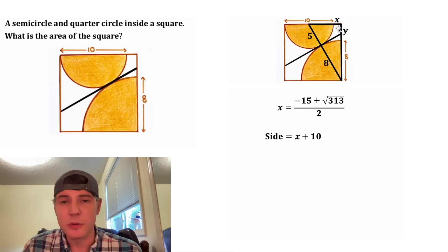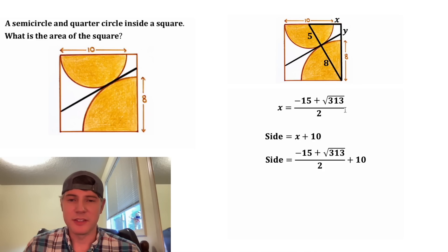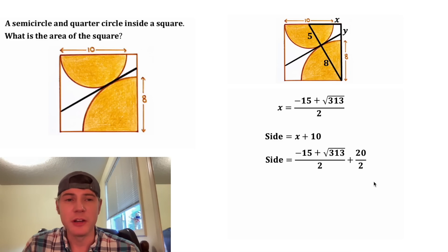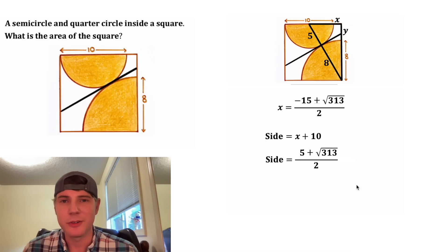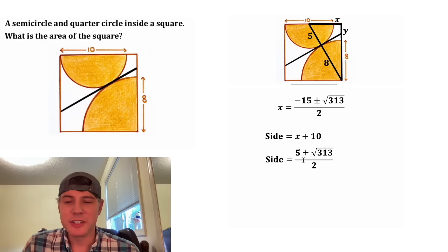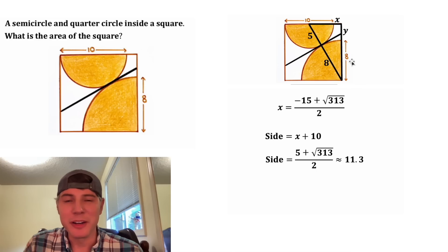So x is equal to negative 15 plus the square root of 313, whole thing divided by 2. And we know that the side length of the square is equal to x plus 10. Plugging in and combining — changing 10 into 20 over 2 — the negative 15 over 2 and positive 20 over 2 give us positive 5 over 2. So the side length is equal to 5 plus the square root of 313, all over 2, which is approximately 11.3.